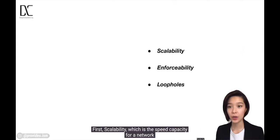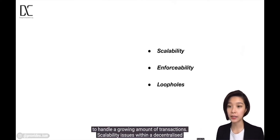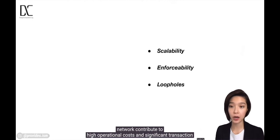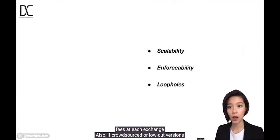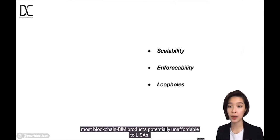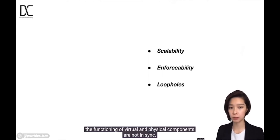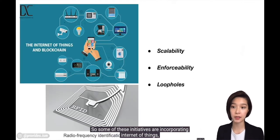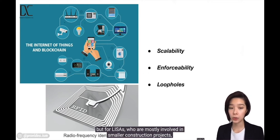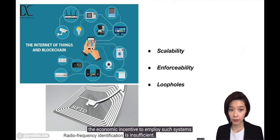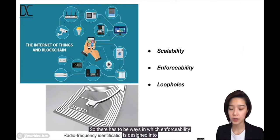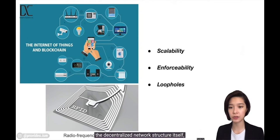First, scalability — the speed and capacity for a network to handle a growing amount of transactions. Such issues within a decentralized network contribute to high operational costs and significant transaction fees at each exchange. Also, if crowdsourced or low-cost versions are not available, the proprietary cost itself may already make most blockchain BIM products unaffordable to leases. Second, enforceability, which occurs when the functioning of virtual and physical components are not in sync. Some initiatives are incorporating IoT or radio frequency identification systems to ensure enforceability, but for leases mostly involved in smaller construction projects, the economic incentive to employ such systems is insufficient.